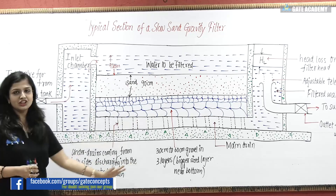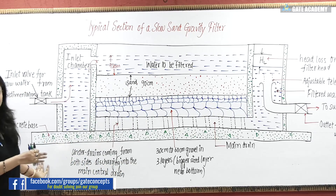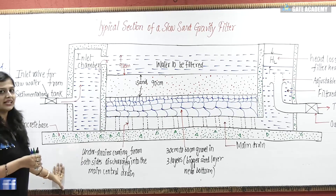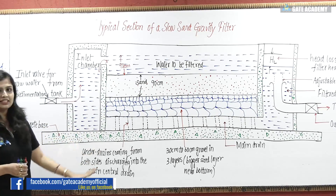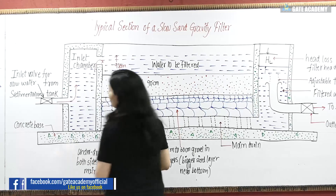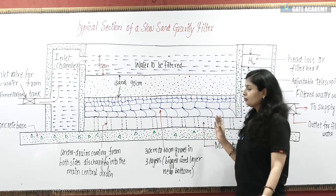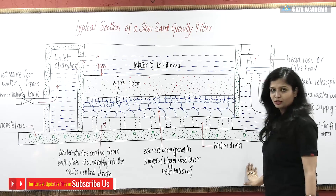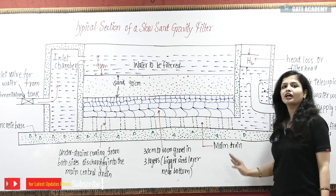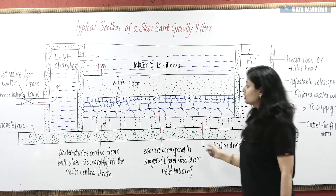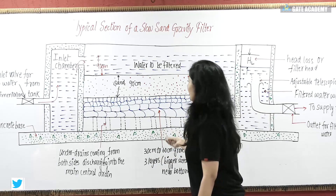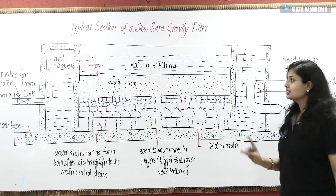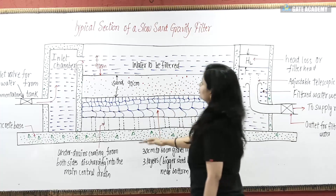Here is the typical section of a slow sand gravity filter. Take a first look at this picture so that you will get a clear view of the slow sand gravity filter. We will discuss various construction details of slow sand gravity filters. First, you can see this is a rectangular tank which we call the enclosure tank. The depth is around 2.5 to 3.5 meters and its area is 100 to 2000 meters square.